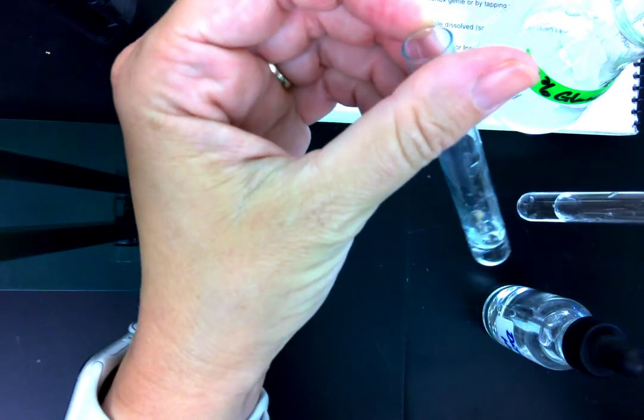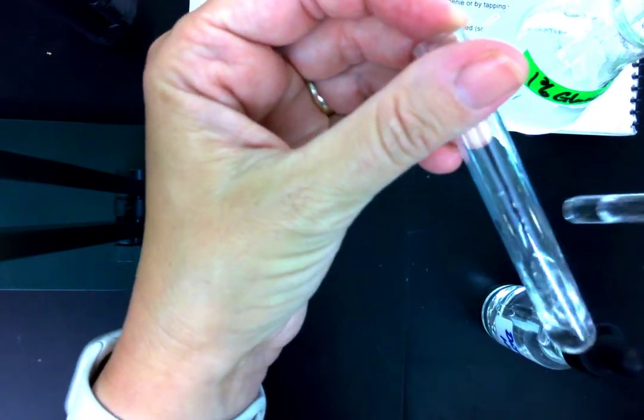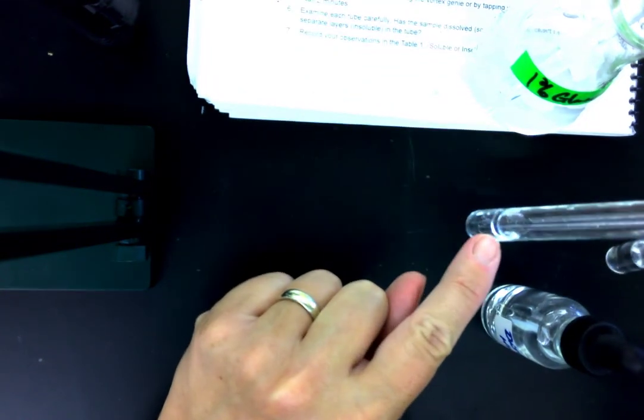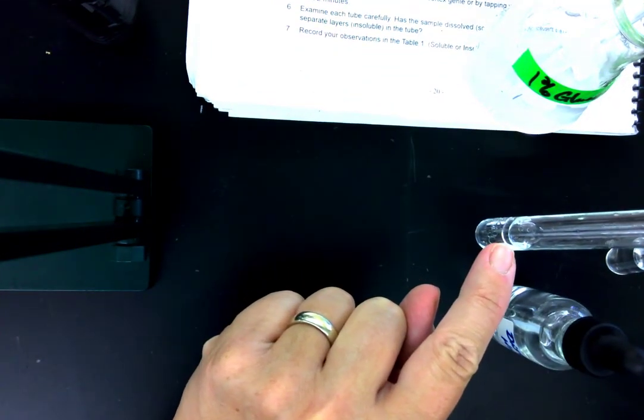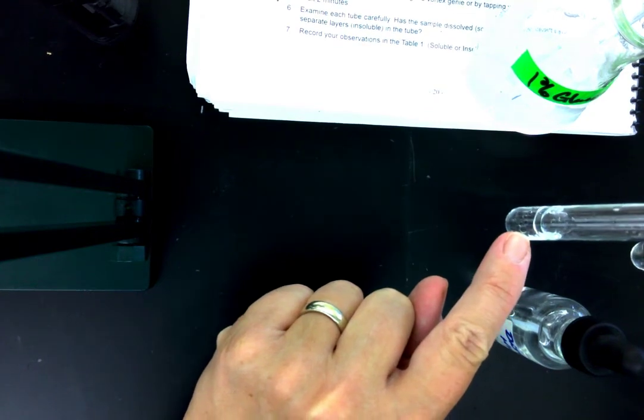Here's the mineral oil again. Where you can clearly see at this point, there's two layers in this tube. There's this top layer of the oil, and the bottom layer of the water.